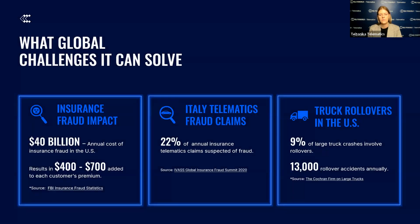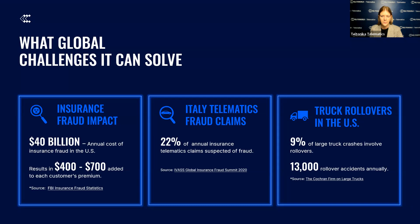Before presenting the capabilities of a gyroscope, I want to highlight some global challenges that may be happening in your industry — as opportunities that could be solved with gyroscope data. In the United States, the annual cost of insurance fraud is $40 billion, adding $400 to $700 to each customer's premium. In Italy, 22% of insurance telematics claims are suspected of fraud every year. By using gyroscope for precise motion tracking, insurance companies can detect incidents more accurately and better evaluate what happened during an impact.